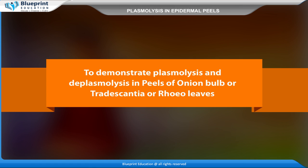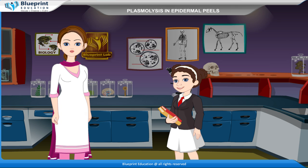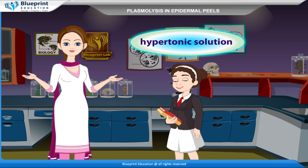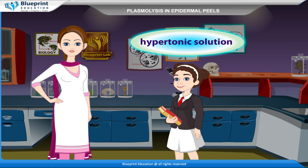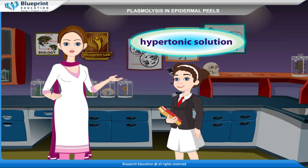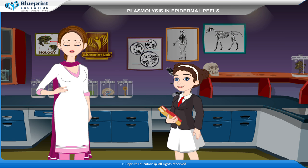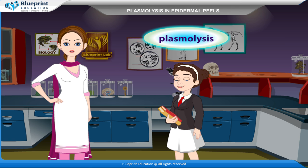To demonstrate Plasmolysis and De-Plasmolysis in peels of onion bulb, Tradescantia, or Rhoeo leaves. In plant cells, when put in a hypertonic solution, the cytoplasm pulls away from the cell wall due to the loss of water through osmosis. This process is called Plasmolysis.